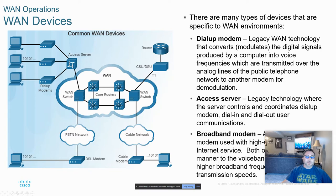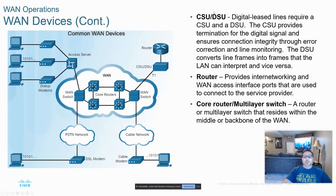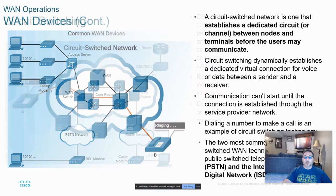As far as WAN devices: dial-up modems are pretty much extinct, but maybe used as a backup in an area where there's nothing better. Access servers are also kind of extinct. Broadband modems are still commonly used. CSU/DSUs apply to digital leased lines like T-carriers and could be external devices or integrated into the router. Leased lines are not as common as they used to be. Routers and multilayer switches are going to be the most common WAN devices we'll deal with.